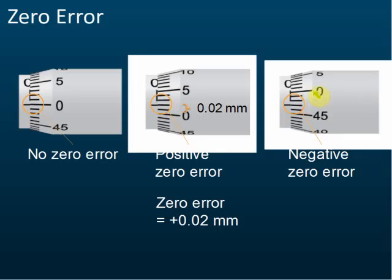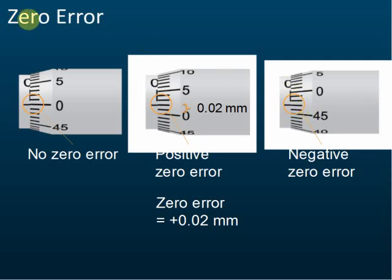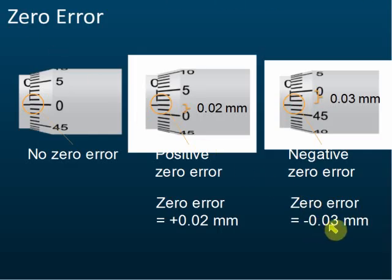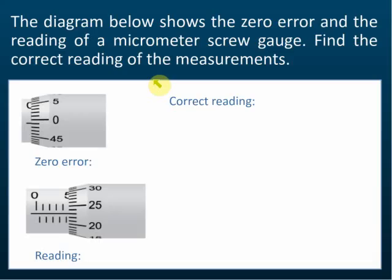This reading is slightly lower than zero — not higher. For a negative zero error, we read from the back: zero, one, two, three — not forty-seven as some students mistakenly read. So the reading is 0.03 mm and it is a negative zero error: -0.03 mm.